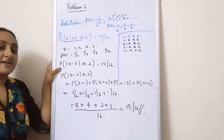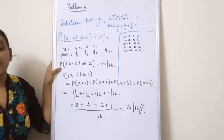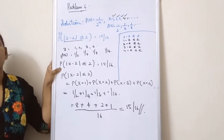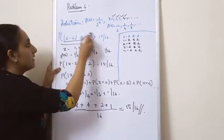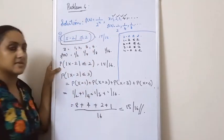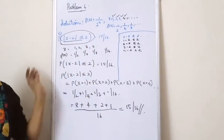Now let us find out a lower bound for this particular probability.